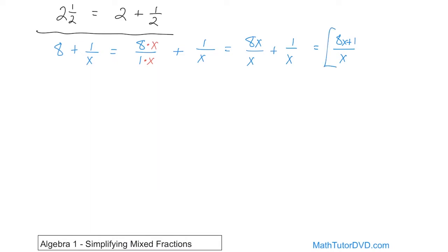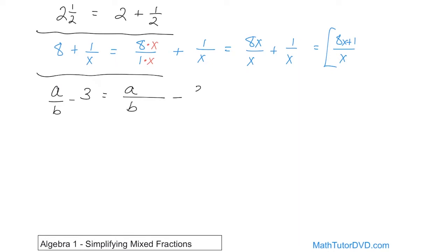I can't simplify that anymore — I can't factor it or do anything else, so I'm done. Anytime you see something hanging out here added to a fraction, just put it over one. For instance, a over b minus three looks complicated until you realize it's just a over b minus three over one — really just two fractions, as it always has been.